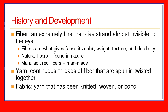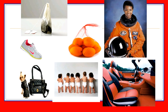From fibers we can create yarn. We take the fibers, twist them together, and create yarns — long, continuous strands of fibers that have been spun and twisted together. Then from the yarn we create fabric. You take those long continuous strands and knit them together, weave them together, or bind them together to create fabric.